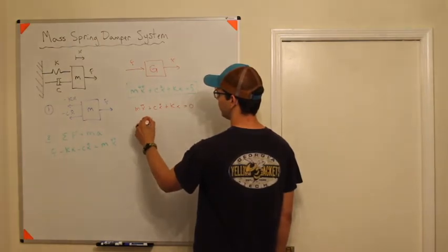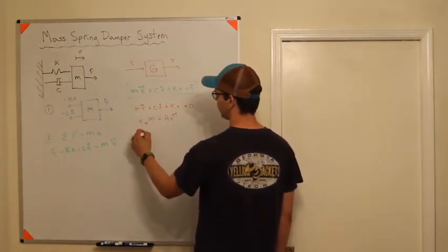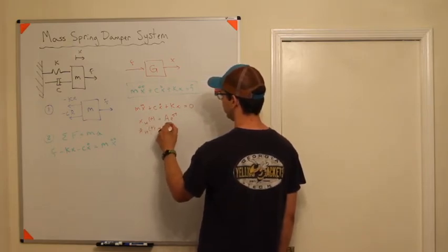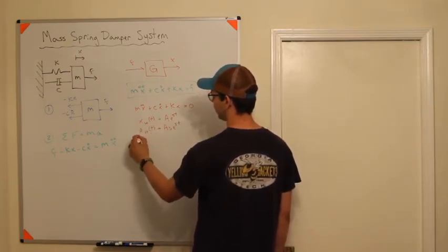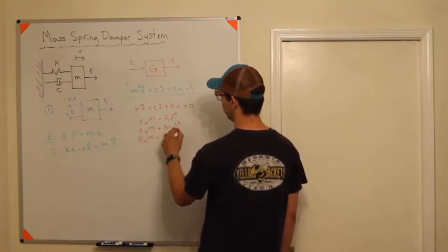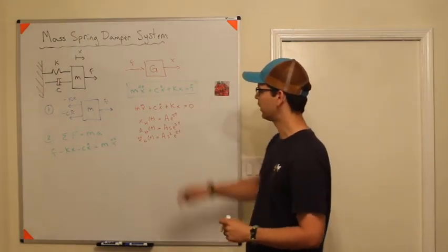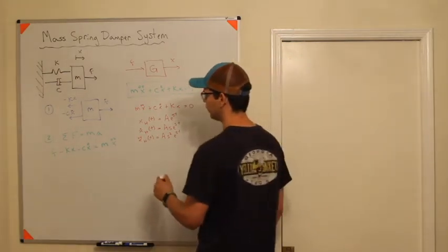Remember we're going to say the homogeneous solution is Ae^(st). We're going to take the first derivative and get As*e^(st), and x_double_dot is going to give us As^2*e^(st). I'm going to take those three functions and plug them back into the equation above.